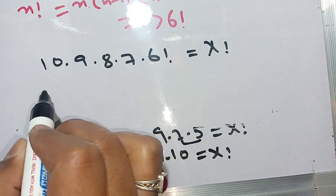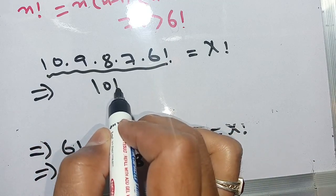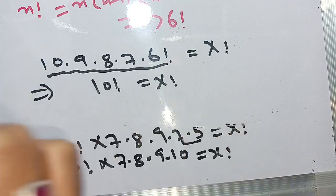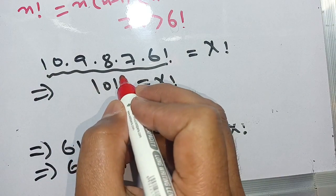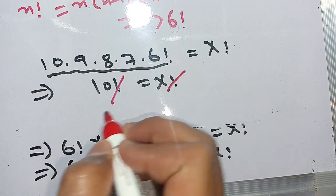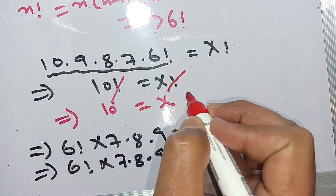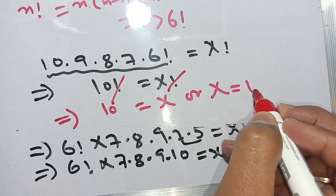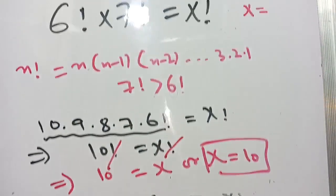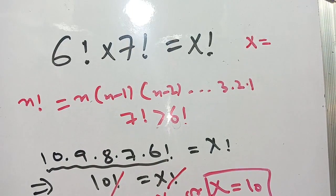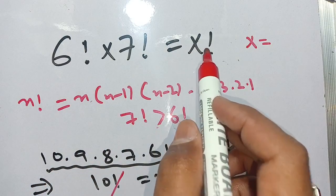Now we can write this as 10 factorial is equal to x factorial. From both sides we cancel out the factorial, which implies 10 is equal to x, or x is equal to 10. Thus the value of x is equal to 10, which satisfies the equation 6 factorial times 7 factorial is equal to x factorial.